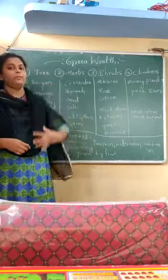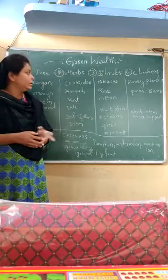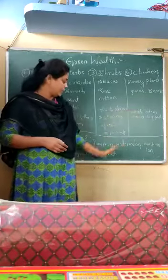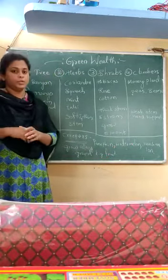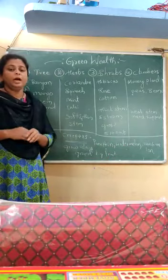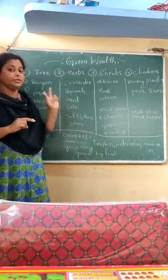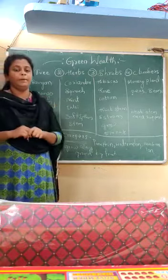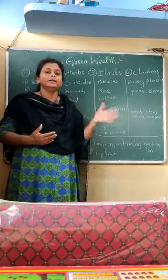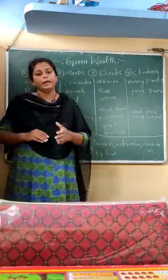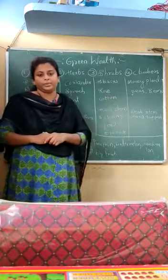We will discuss more about shrubs in the next video. I hope you have understood what we discussed today. In the next video we are going to discuss shrubs, climbers, and creepers. Before ending, here is your homework: write down how we have divided the green wealth into five types, and for the first two types — trees and herbs — give examples and write about them.